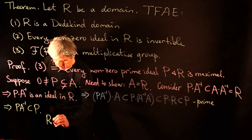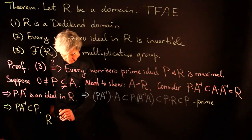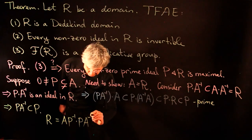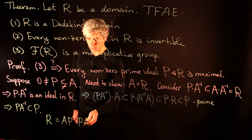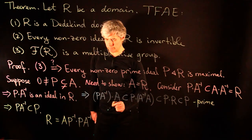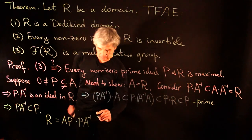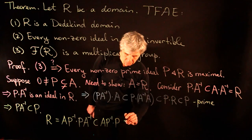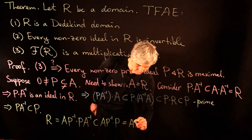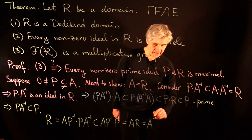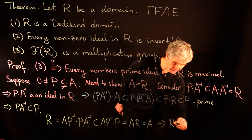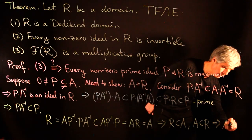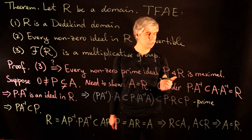Consider R = (A·P⁻¹)·(P·A⁻¹). Since P⁻¹·P = R and A·A⁻¹ = R, this holds. But we proved P·A⁻¹ ⊆ P, so R = (A·P⁻¹)·(P·A⁻¹) ⊆ (A·P⁻¹)·P = A·(P⁻¹·P) = A·R = A. Thus R ⊆ A, and since A ⊆ R we get A = R. This proves every prime ideal is maximal, completing the proof of our main theorem.